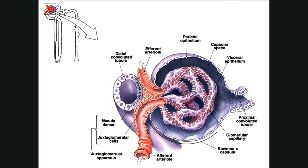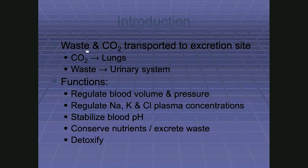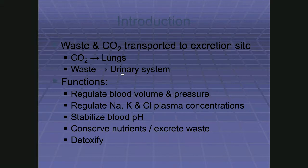The efferent arteriole wraps around and becomes those paratubular capillaries before becoming the actual vein. We create a lot of waste through metabolism — C₆H₁₂O₆ + O₂ gives us CO₂ + H₂O. We get rid of CO₂ at the lungs; the rest of the metabolic waste is removed in urine. So removing metabolic waste is a key job of the urinary system, but the primary function remains homeostasis of blood plasma.